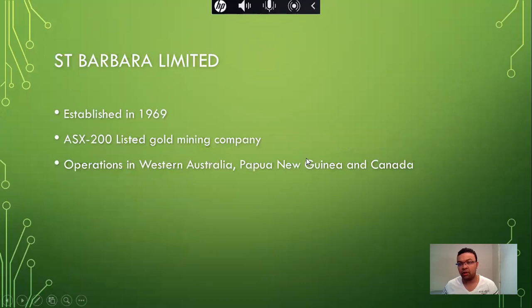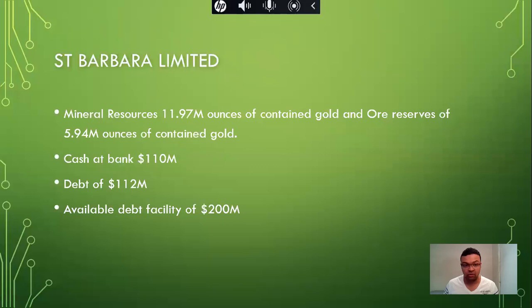The company I've chosen to talk about is called St. Barbara Limited. It was established in 1969 and is an ASX200-listed gold mining company with operations in Western Australia, Afghanistan, and Canada. The company's mineral resources are 11.97 million ounces of contained gold and a reserve of 5.94 million ounces of contained gold. Its cash on bank is $110 million, a debt of $112 million, and an available debt facility of $200 million as at 30th of June 2019.